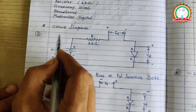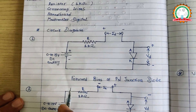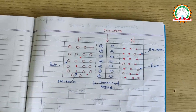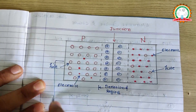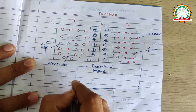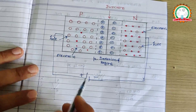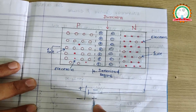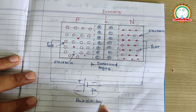Now see the circuit diagram of P-N junction diode. The P-N junction diode works in two bias conditions: one is the forward bias condition and one is the reverse bias condition. When the P-type semiconductor is connected to the positive terminal of the battery and the N-type semiconductor is connected to the negative terminal of the battery, this configuration is known as forward bias. In the reverse case, when P-type is connected to the negative terminal and N-type to the positive terminal, this is known as reverse bias.